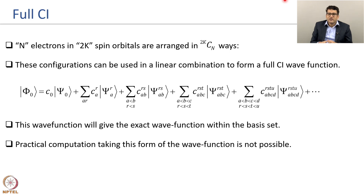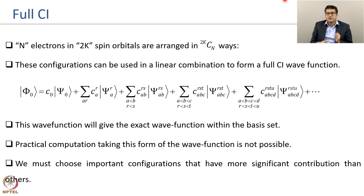However, practical computation using the full CI wave function is not possible except for very small molecules and very small basis sets, which do not have any chemical sense. To get to the exact energy, you need to extend both the one-electron basis set axis and the wave function accuracy axis. What we can do instead is choose the important configurations necessary to describe a particular kind of system or property and perform practical calculations.